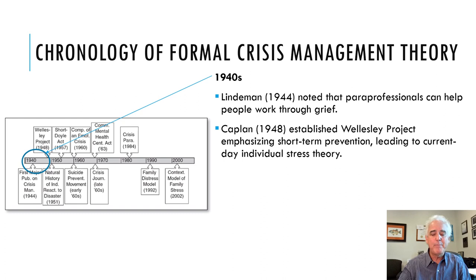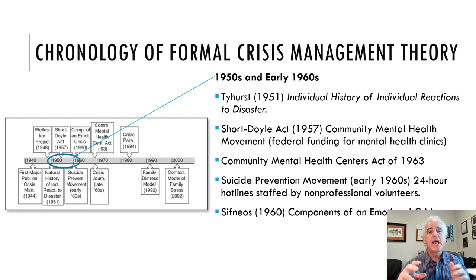In the 1950s and into the early 1960s, we begin to see crisis management theory take root. We've got Tyhurst, whom we talked about with individual reactions to disaster. In 1957, we had the Short-Doyle Act, which established community mental health clinics — federal funding for mental health clinics. And so we began establishing these mental health clinics, which in the 1980s and into the 1990s, we began to abolish. And that's why we have such a homeless population. Many of the homeless are people that could have been treated in a community mental health clinic and done much better, but because they didn't get treatment in crisis, they ended up on the streets.